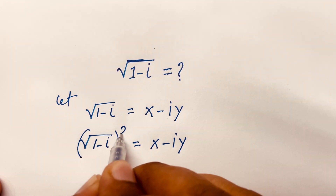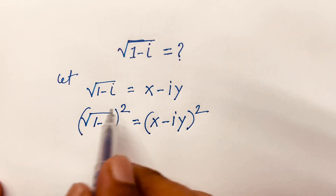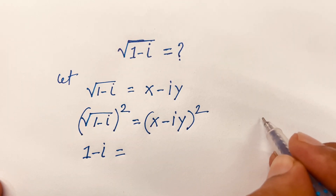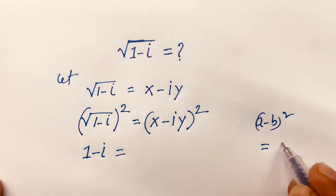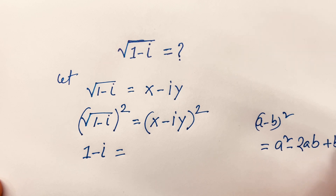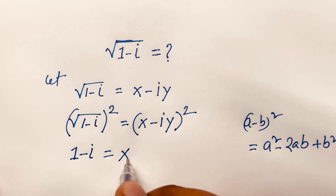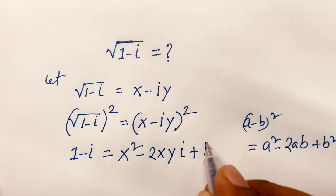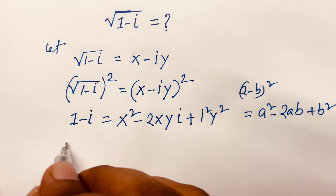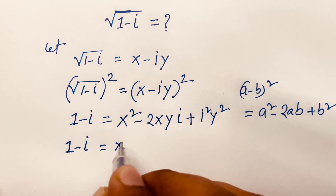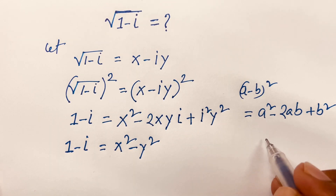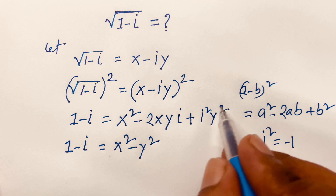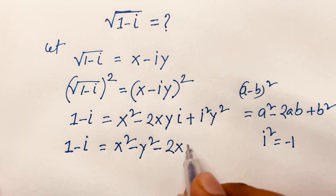I use both sides squared. The square root is cancelled, so we find 1 minus i equals, according to algebra rules, (a minus b) whole square equals a squared minus 2ab plus b squared. Following these rules, I can say x squared minus 2xy·i plus i squared. Then 1 minus i equals x squared minus y squared, because i squared is minus 1, so it becomes plus, making it minus y squared, minus 2xy·i.